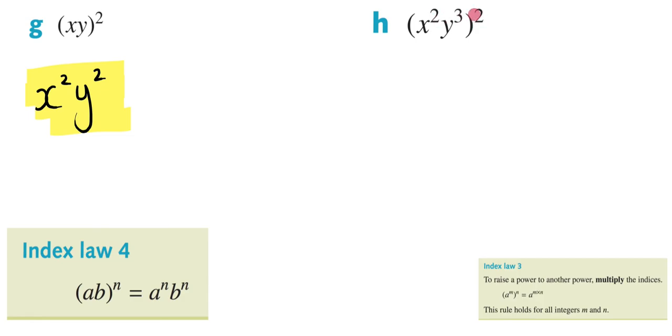So again, I'm going to be bringing this 2 to both of them, but it's going to be 2 times 2 over my X and 2 times 3 over my Y. So it's going to be X, 2 times 2, 2 times 2. Then Y, 3 times 2, 3 times 2.